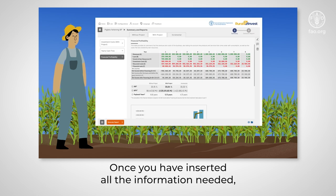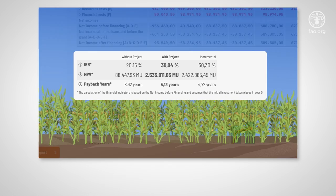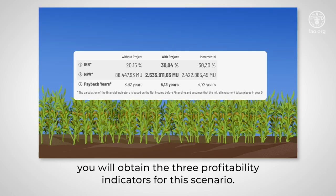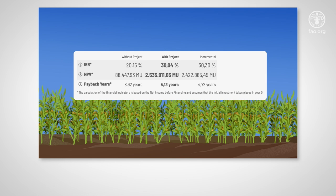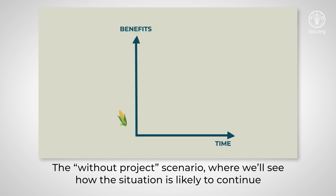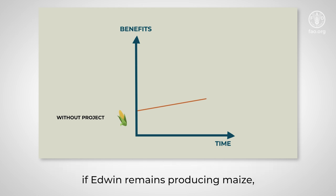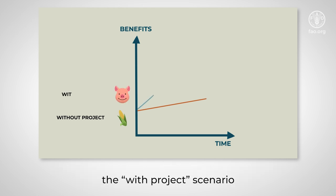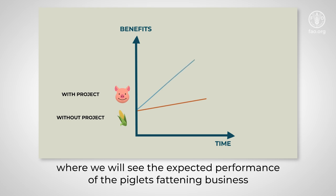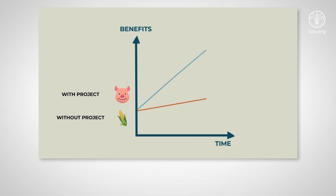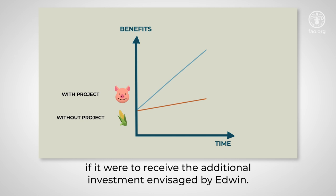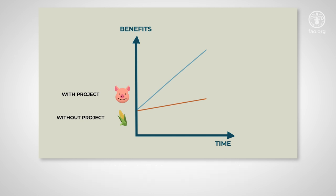Once you have inserted all the information needed, you will obtain the three profitability indicators for this scenario: the without project scenario, where you will see how the situation is likely to continue if Edwin remains producing maize; and the with project scenario, where we will see the expected performance of the piglets fattening business if it were to receive the additional investment envisaged by Edwin.